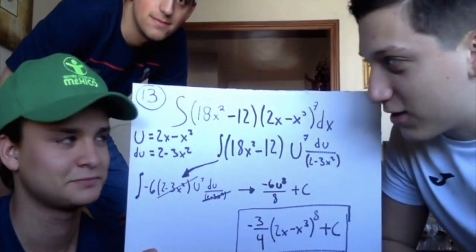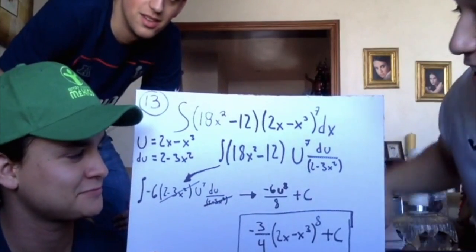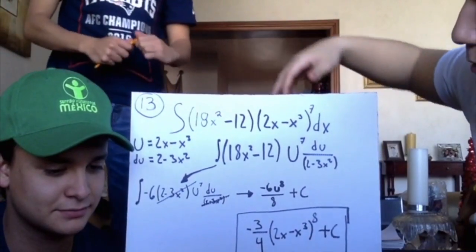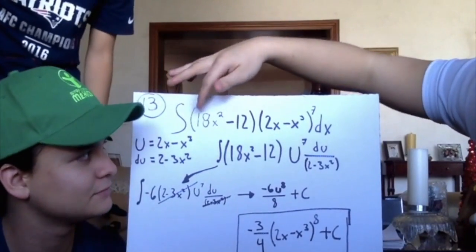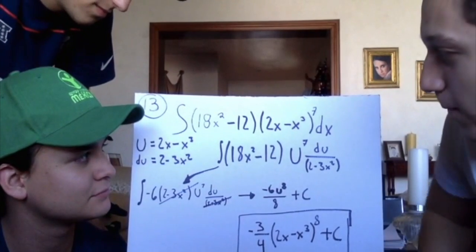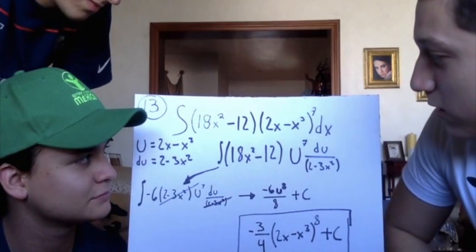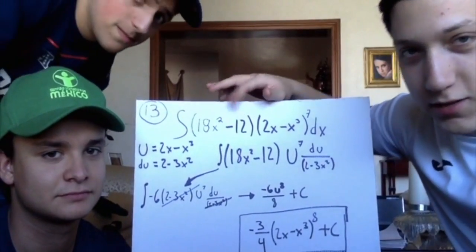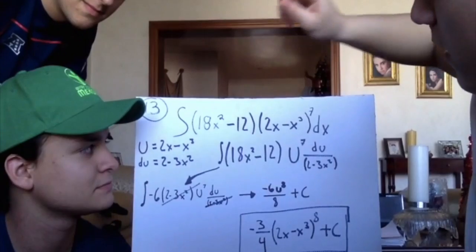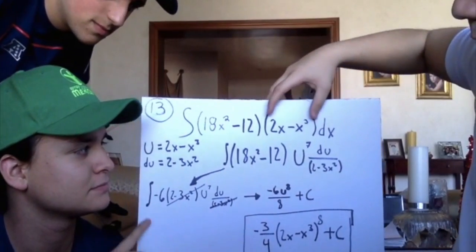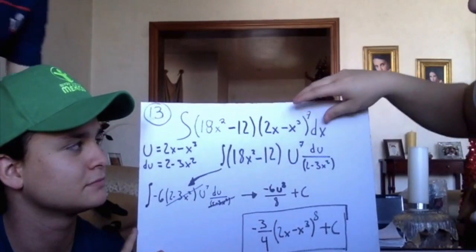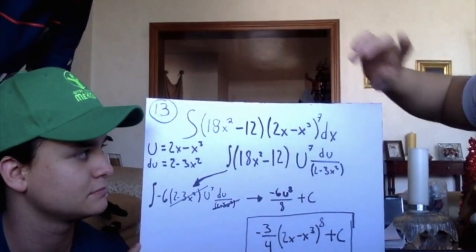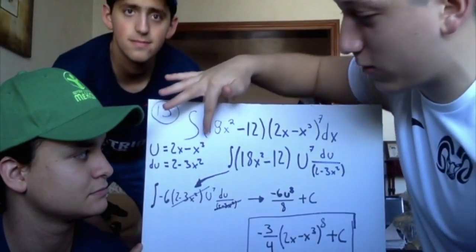So this is problem number 13, and we need to integrate by substitution this problem. The problem is 18x squared minus 12 times 2x minus x cubed to the power of 7. The first thing we need to analyze in this problem is to get the term with the bigger exponent, which will be 2x minus x cubed, because x cubed is bigger than x squared.